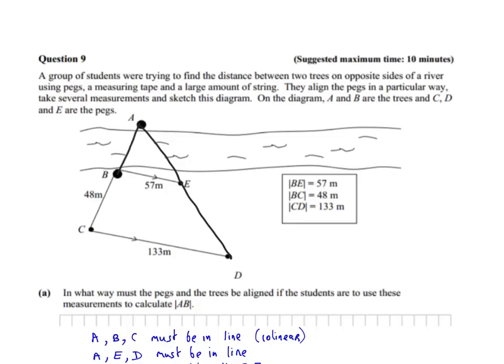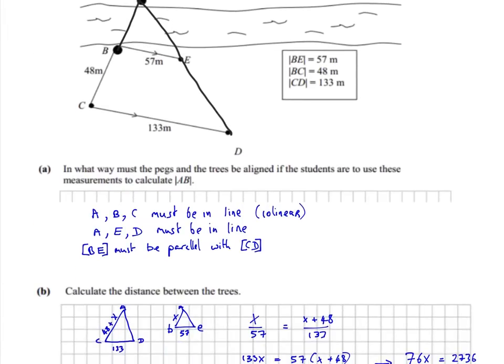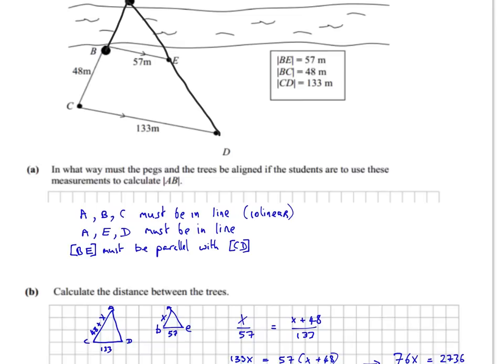So I can show you how we do that in a while. But to answer this particular question, in what way must the pegs and the trees be aligned if the students are to use these measurements to calculate the length of AB? We just say A, B and C must be in line. The technical term is collinear. You don't really have to remember that. Just say something like they must be in line. A, E and D must be in line. So that makes it a proper triangle. And then, of course, these have to be parallel. So segment BE must be parallel with the segment CD. So that's all we have to do to ensure that these are similar triangles so we can find out what the length of this is.